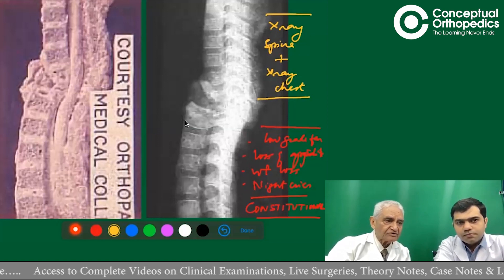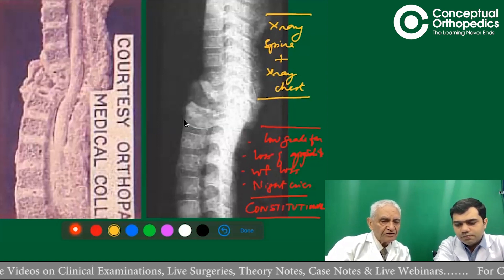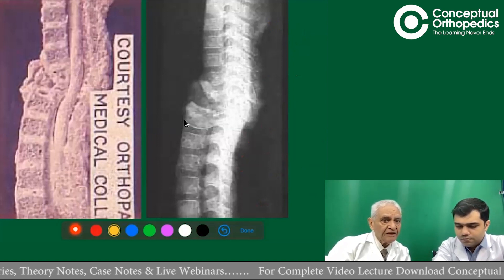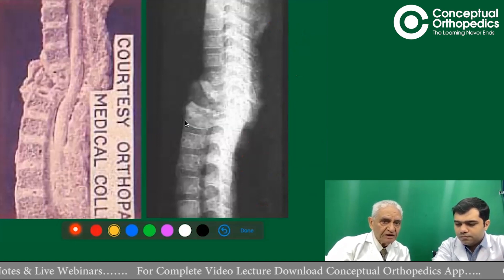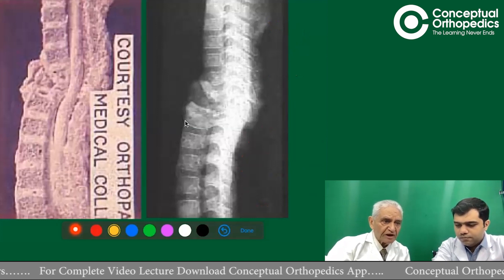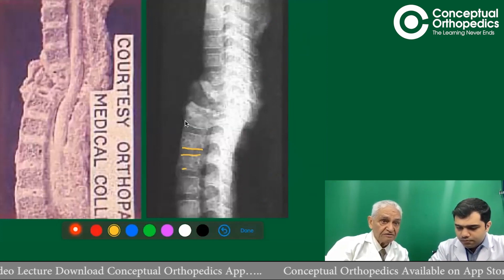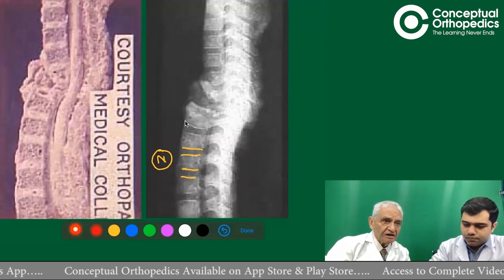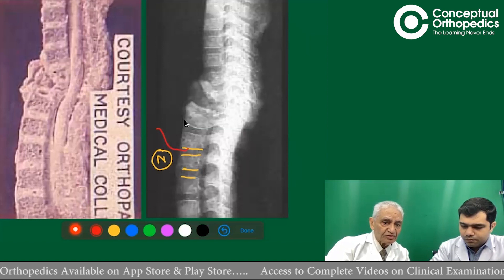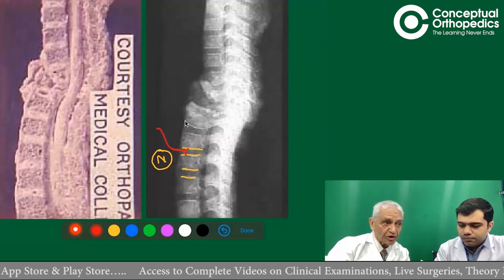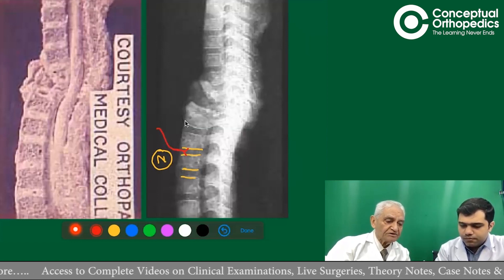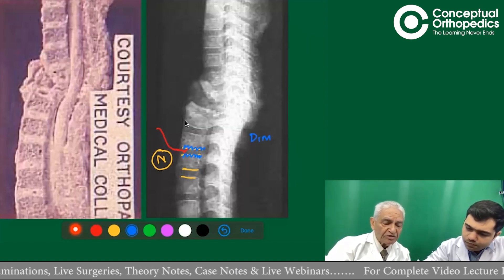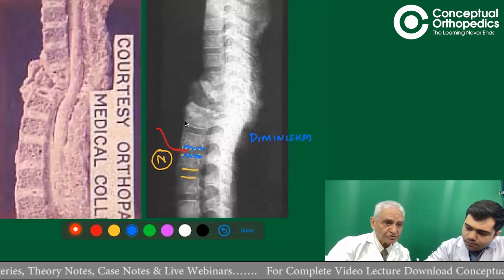In X-rays, we see patients in early, medium, neglected, or complicated stages. The earliest changes in the spine X-ray are reduction of the disc space with erosion of paradiscal margins. This happens because the paradiscal margins of the vertebral bodies are supplied by the same artery, and the disc is nourished by adjacent bones. If the paradiscal margins are destroyed by infection, disc nutrition diminishes. Thus the earliest features are diminished disc space, erosion of paradiscal margins, and some degree of osteoporosis.